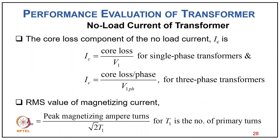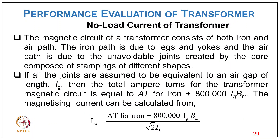The core loss component of no-load current Ic = core loss / V1 for a single-phase transformer, and Ic = core loss / (√3 × V1 per phase) for a three-phase transformer. The RMS value of magnetizing current Im = peak magnetizing ampere-turns / (√2 × T1), where T1 is the number of primary turns. The magnetic circuit consists of both iron and air paths — iron from legs and yokes, and air from unavoidable joints.